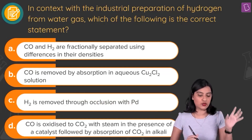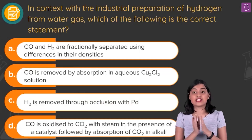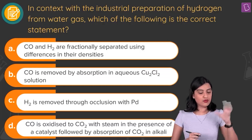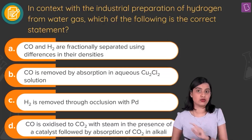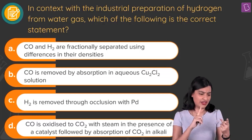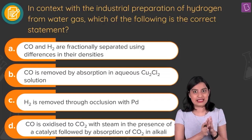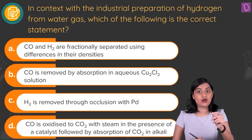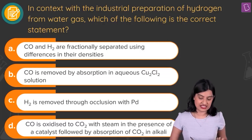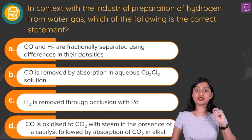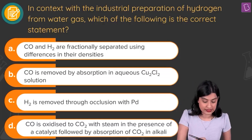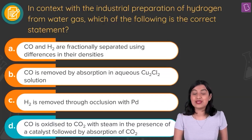Option A says CO and H₂ are fractionally separated by density differences — not correct. Option B says CO is removed by absorption in aqueous CO₂Cl₂ solution — also not correct. Option C says H₂ is removed through occlusion with palladium — not the process here, do not mark this. Option D says CO is oxidized to CO₂ with steam in the presence of a catalyst, followed by absorption of CO₂ in alkali — that is correct. Option D is the right answer.